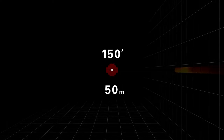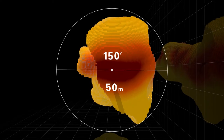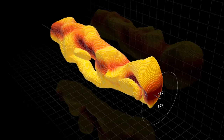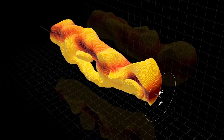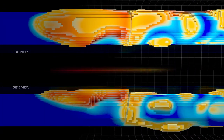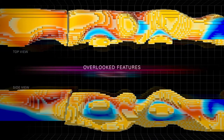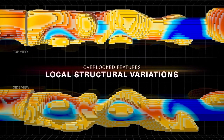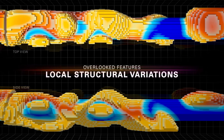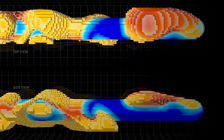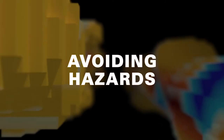This LWD technology is the industry's only proven 3D inversion technology for real-time decision-making in three dimensions. 3D inversion reveals overlooked features like faults, water zones, and local structural variations that can considerably alter the optimal placement of a well.